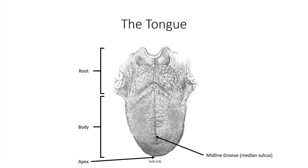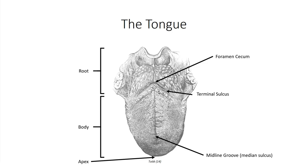Along the midsagittal line, the midline groove divides the tongue into left and right sides. Running transversely along the tongue is the V-shaped terminal sulcus. At its apex is the foramen cecum, a small impression representing the embryological remnant of the thyroglossal duct, formed during the descent of the thyroid gland into its anatomical position. Incomplete closure of this passage results in a patent thyroglossal duct, which can lead to a thyroglossal cyst — considered the most common cause of a midline neck mass in children under age 10.